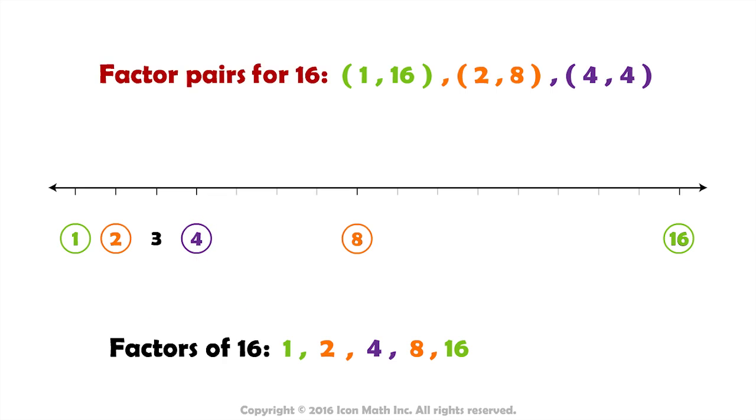So, we have the factor pairs 1 and 16, 2 and 8, 4 and 4 for the number 16. And we have the numbers 1, 2, 4, 8 and 16 as factors for the number 16.